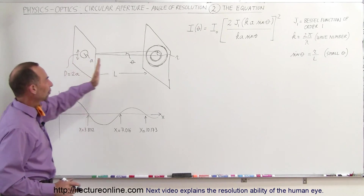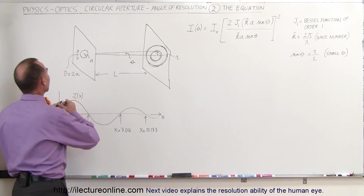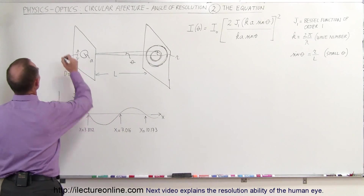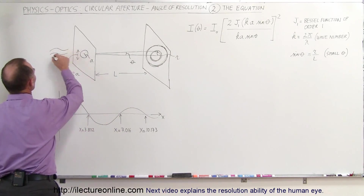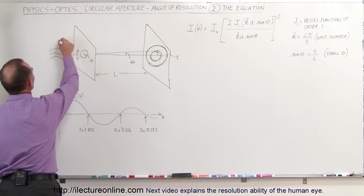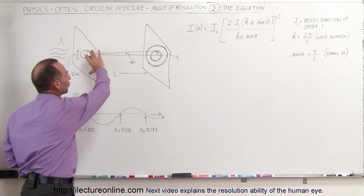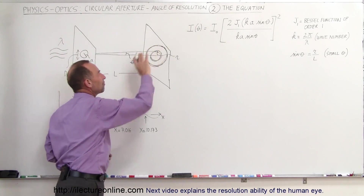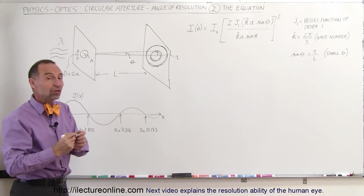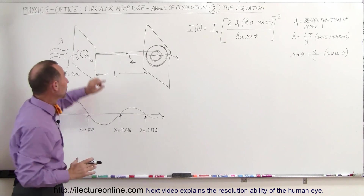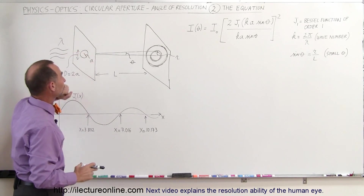Some distance further away there's a screen, and if light passes through the initial small hole with wavelength lambda, it's going to form a diffraction pattern on the screen, which is circular in nature because the aperture is circular.